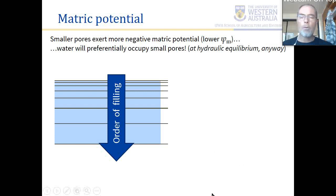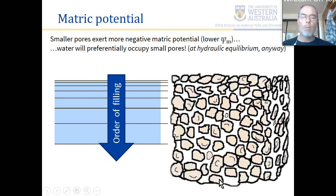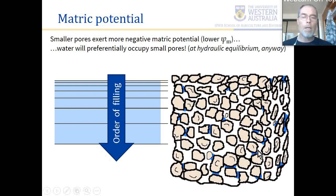Diagrammatically, small pores attract water first because water minimizes its potential to a lower value by entering a smaller pore compared with a larger one. So the order of filling is from small to large. Initial water addition to the soil, once it equilibrates, will end up in the very small pores, while the largest spaces between soil grains or aggregates are not occupied.